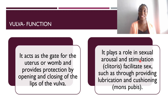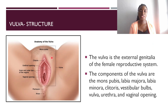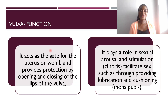The vulva also plays a role in sexual arousal and stimulation, as mentioned with the clitoris, and it facilitates sex. There are secretions produced by glands in the vulva which allow for lubrication of its various parts, facilitating sex. There is also the mons pubis, which is the layer of skin covering the top of the vulva. During puberty, hair grows on the mons pubis.